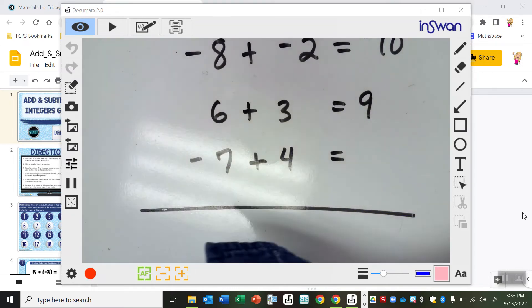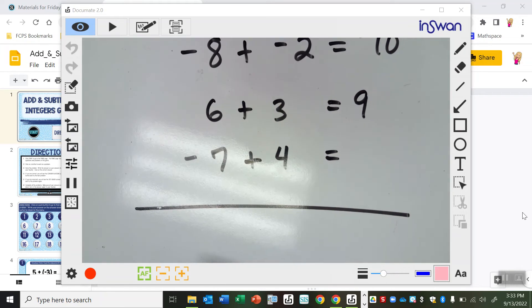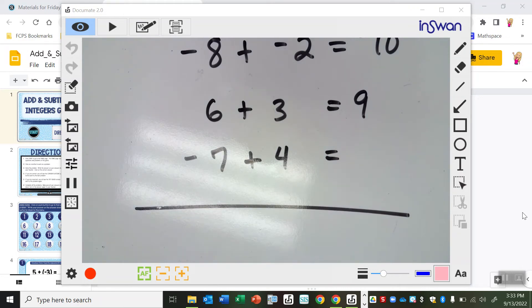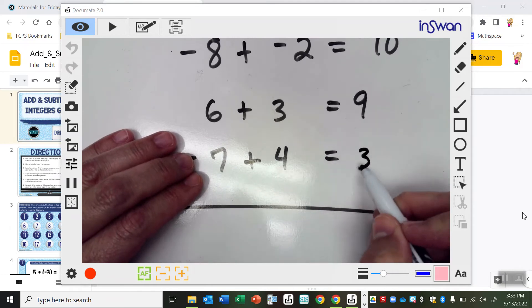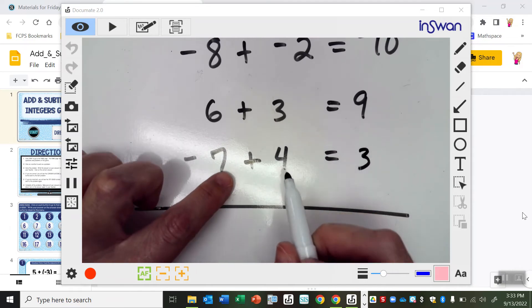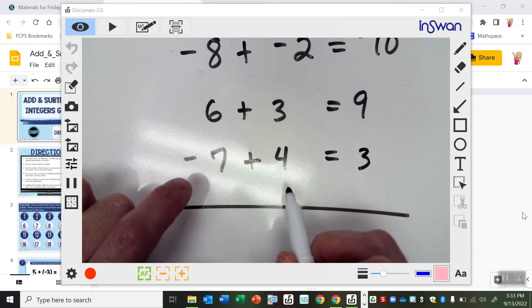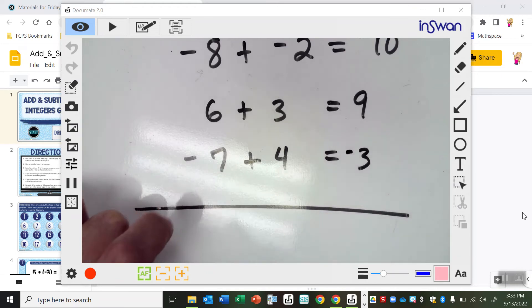But what I can also do, and what we talked about last time, is this. When you have signs that are different, they act against each other. So what you do is, in your mind, you subtract the numbers. 7 minus 4 is 3. And then whichever number is bigger, 7 or 4, you take the sign. So 7 is bigger, so I take a negative right there. So when they act against each other, you kind of subtract the numbers, and you keep the sign of the bigger number to start with, like the 7 or the 4. All right.